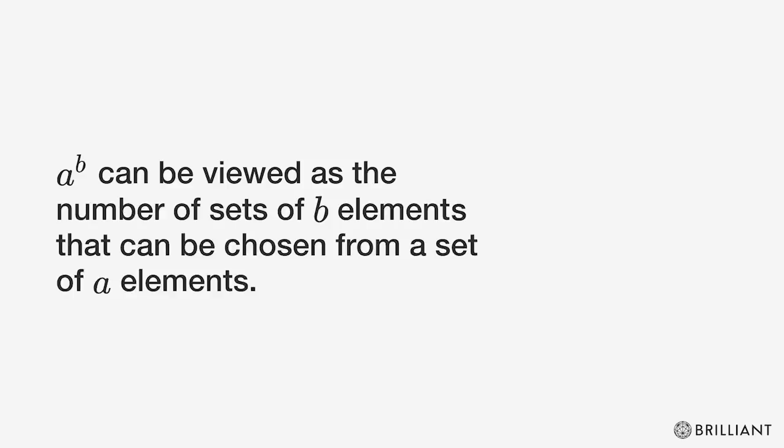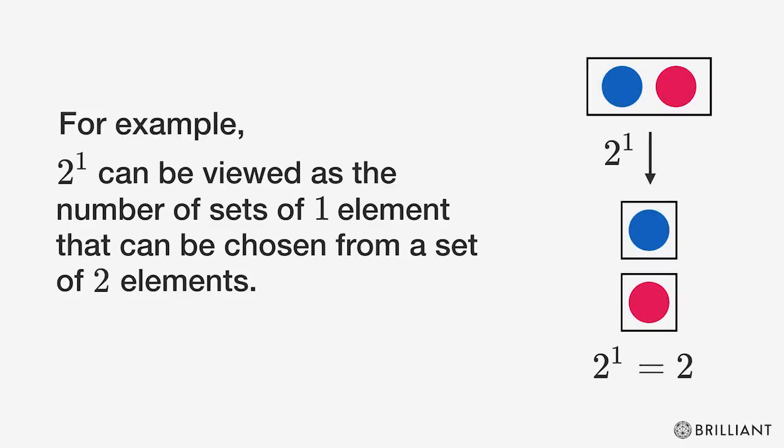A raised to B can be viewed as the number of sets of B elements that can be chosen from a set of A elements. For example, two to the first power can be viewed as the number of sets of one element that can be chosen from a set of two elements.